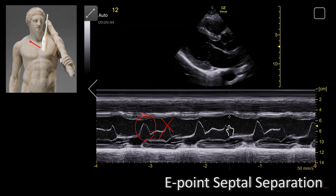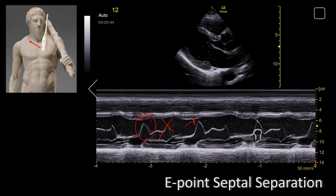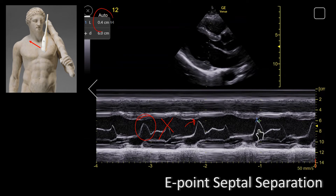If the mitral valve touches the septum, that is great, that is normal, and you don't have to do anything about it. But if the E-wave doesn't fully touch the septum, just like it's shown here, then you have to measure the distance between the septum and the tip of the E-wave, just like it's shown here. So in this patient, the distance between the E-point and the septum is 4 millimeters.